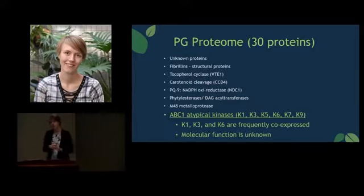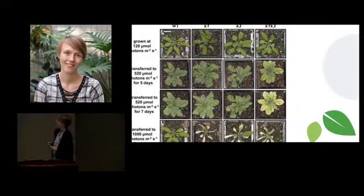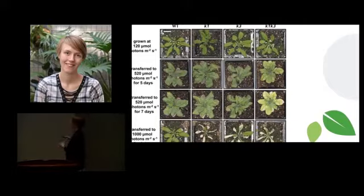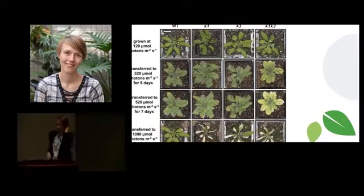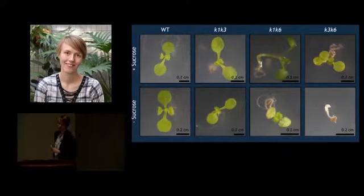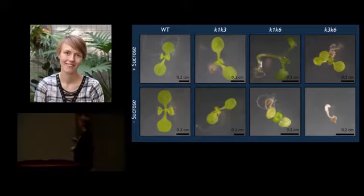Pictured here are the results from a previous study in which wild-type and mutant Arabidopsis were grown under varying light conditions. You can see that under low light the mutants show the same phenotype as wild-type, but under high light stress the mutants' leaves turn white and they completely die. It's also been shown that some combinations of mutant genes result in reduced photo-autotrophic ability. Without sucrose supplementation, the K1K6 mutant has pale leaves and the K3K6 mutant is seedling lethal.